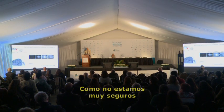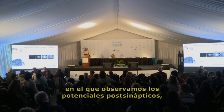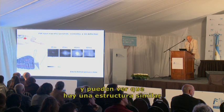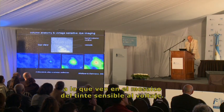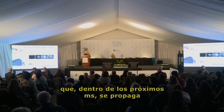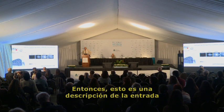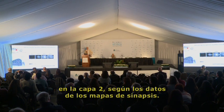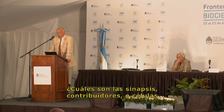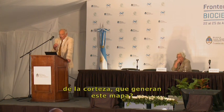Since we are not quite sure what the voltage-sensitive dye reports, we did parallel experiments looking at the post-synaptic potentials to establish these input maps — PSP maps. And you can see they have a rather similar structure to what you see with the voltage-sensitive dye. After 10 milliseconds, the first EPSPs appear, which then spread within the next milliseconds to almost the whole vibrissae cortex. This is a description of the input in layer 2 as reported by the PSPs, and what we want to know is what's behind that — which synapses, contributors, or cells generate this map.